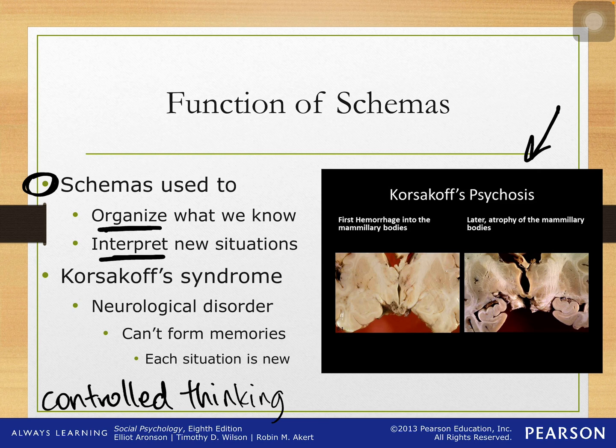We know this from a condition called Korsakoff syndrome, or Korsakoff's psychosis — it's a neurological disorder referred to by a number of names. It stems from a severe B vitamin deficiency that can occur in severe eating disorders, malnutrition, and also in severe alcoholism. What happens is the person loses the ability to create new memories, and they also lose a lot of their old memories too. So it's actually two forms of amnesia, and it's a very devastating disease.